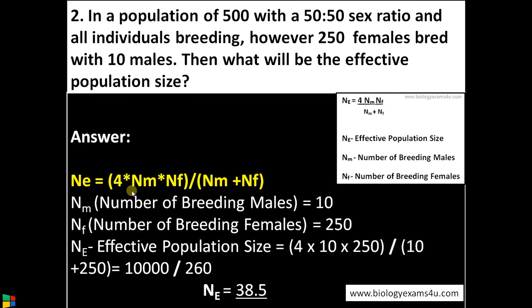The equation is Ne = 4 × Nm × Nf / (Nm + Nf). Considering the number of breeding males is 10 and the number of breeding females is 250, so 4 × 10 × 250 / (10 + 250) = 10,000 / 260, giving approximately 38.5. So it is very simple if we know the formula for finding out effective population size.